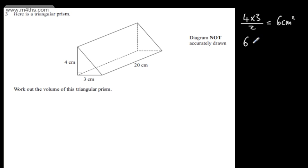We're going to take the 6 and multiply it by the length, which is 20, and that's going to give me 120 centimetres cubed.